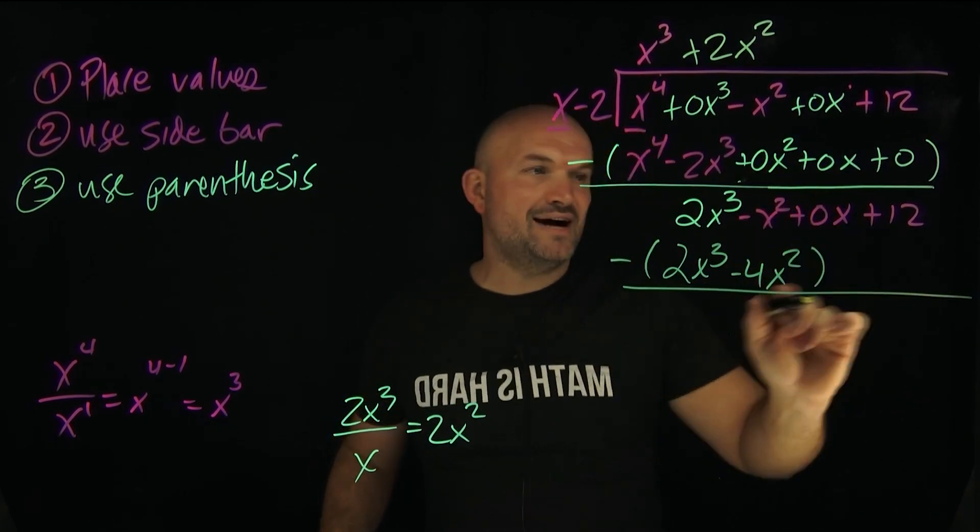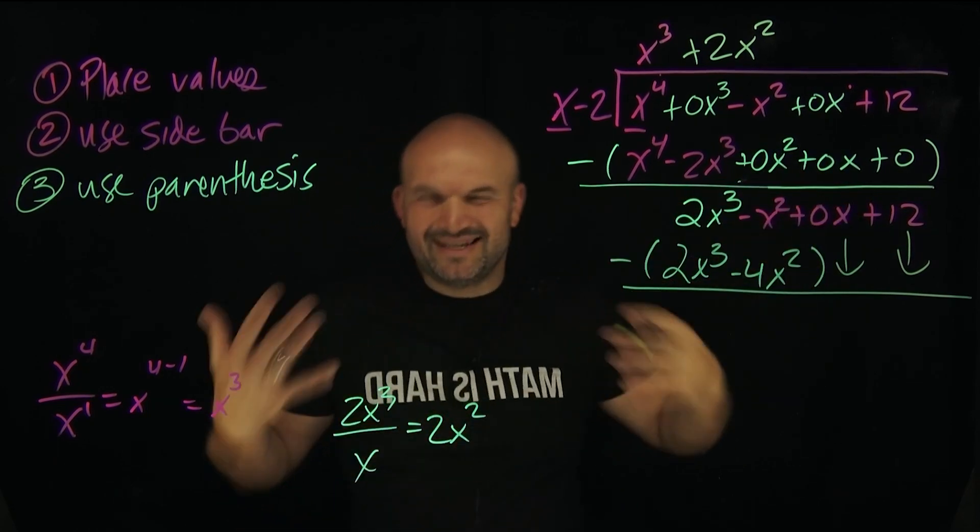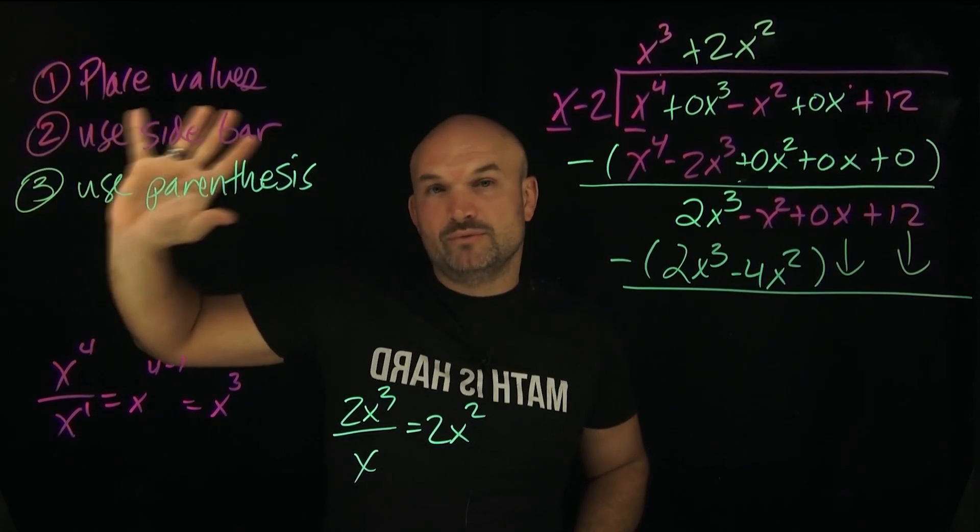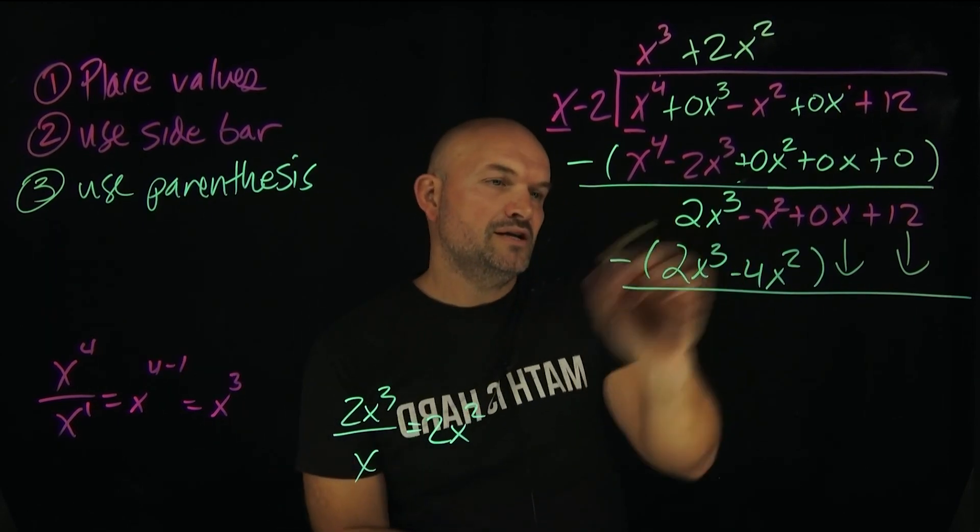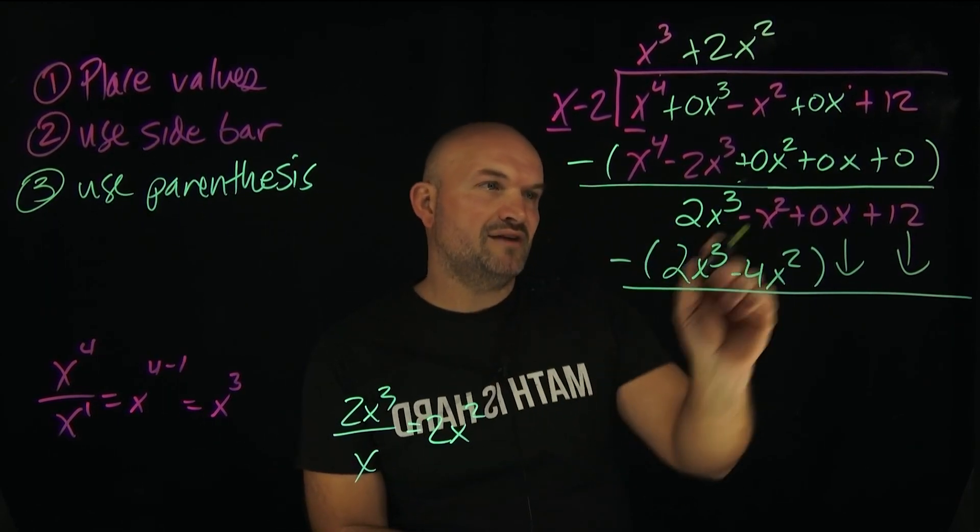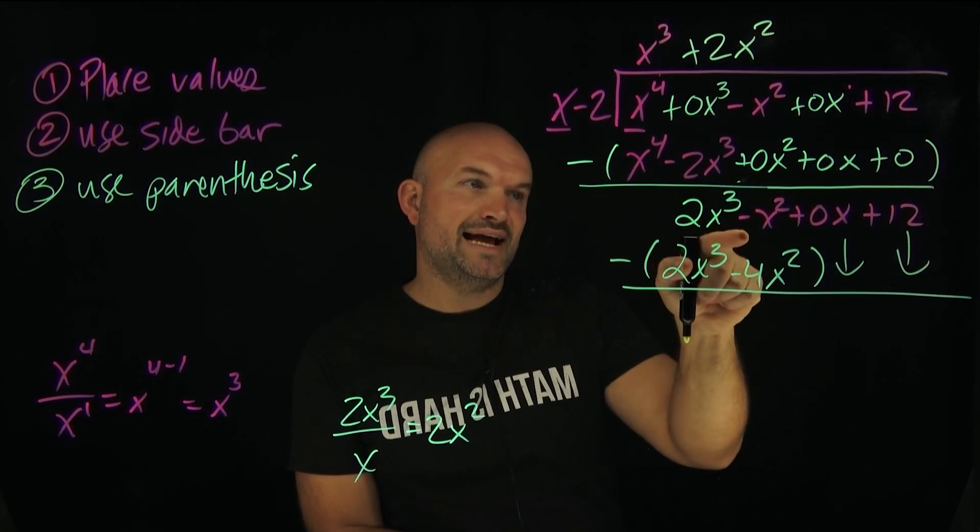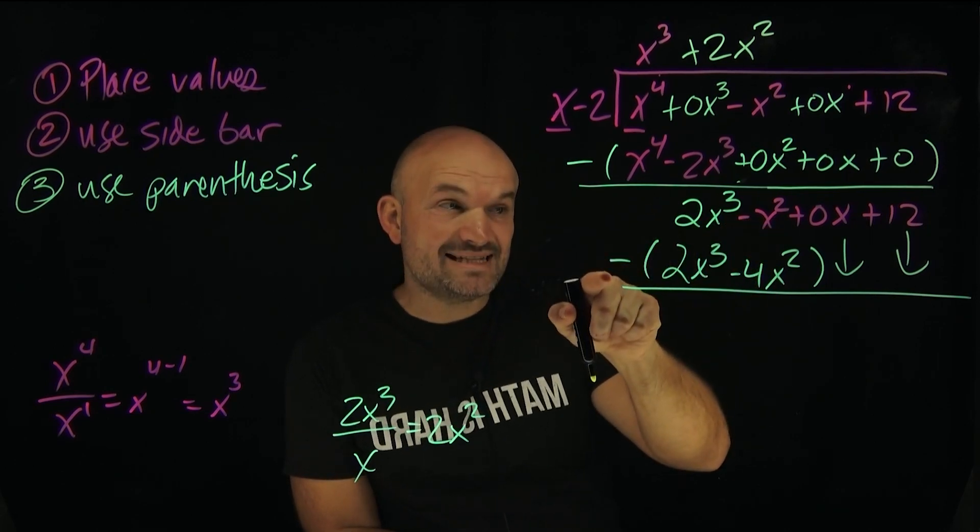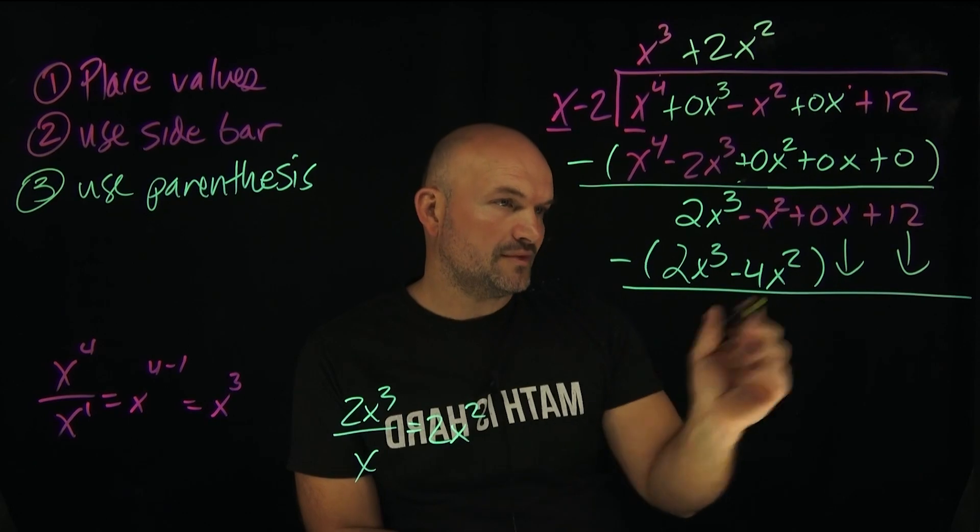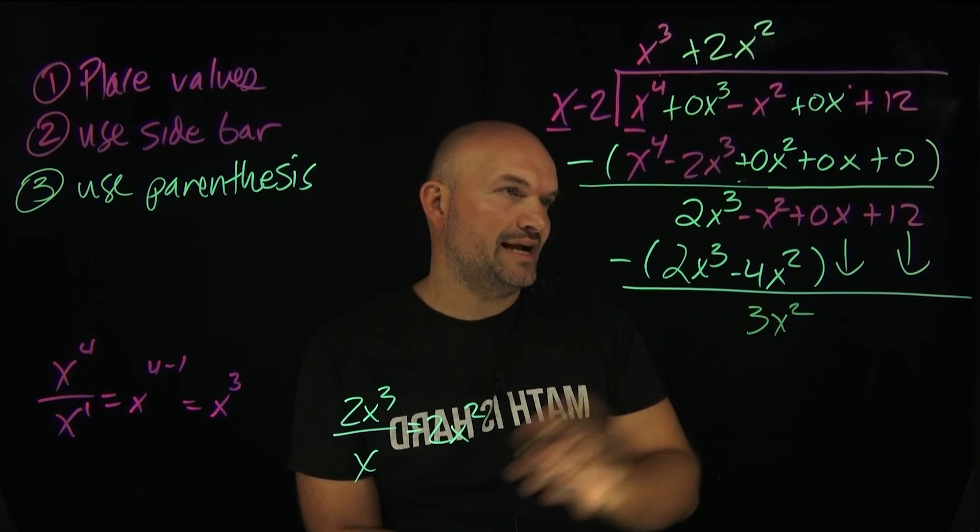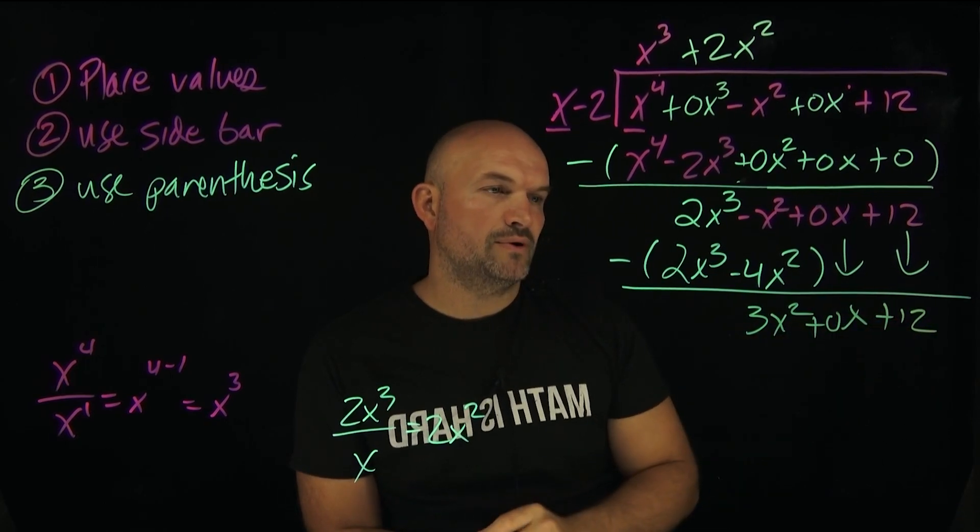And again, subtract your rows. I'm not going to bring all of these down. I'm just going to bring them down. We know we don't need to subtract them from the place values. That's extra work. But it's really helpful when you're first learning to follow these three tips. Now again, here's where parentheses are important. A lot of students will say, oh, that's -5x². No. -x² minus a -4x². Well, that's a double negative. That's like a positive. So therefore, that's going to give us 3x². And then we have a plus 0x plus 12.